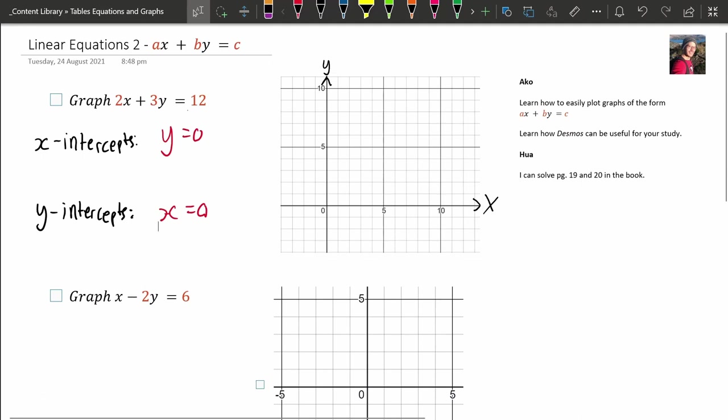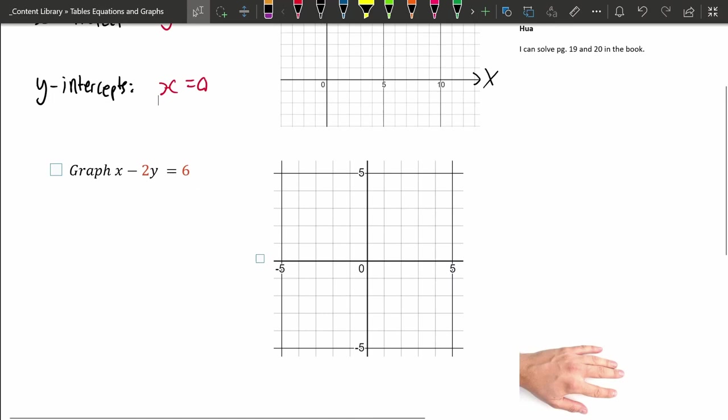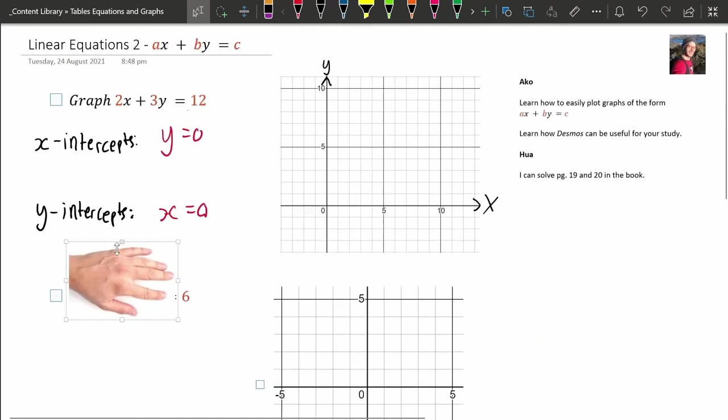So to find the Y intercept, put your hand up and get a finger, or maybe a hand depending on your screen, and cover this 2X. Cover the 2X with your hand. Do it. Alright, so leave your hand there. Should look something like this.